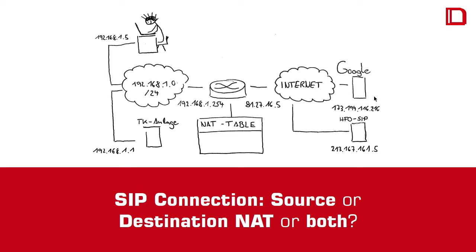I added some new things to my drawing from the last tutorial. Again, TK-Anlage, which means PBX, just in my local network. And here is my SIP carrier, which is some SIP carrier and has this IP address. So what happens? I register here. And the big question is: do I need source NAT, destination NAT, or both? So for sure I need source NAT, because otherwise I could not do an internet connection because my local IP address will not be routed.